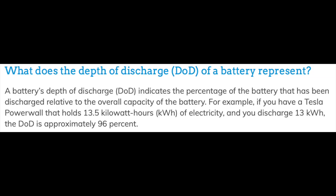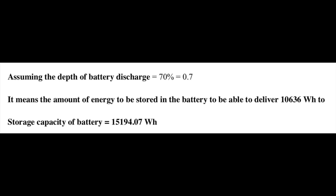The next component is the batteries. Batteries are not meant to be discharged completely, so they usually have a maximum depth of discharge — the percentage to which they can be discharged — and this must be considered while sizing the battery. We are going to assume that our batteries have a depth of discharge of about 70%. So the amount of energy to be stored in the battery to deliver the inverter capacity will be the inverter capacity divided by 0.7, and that gives us approximately 10,686 Wh. This would be the storage capacity of our batteries.